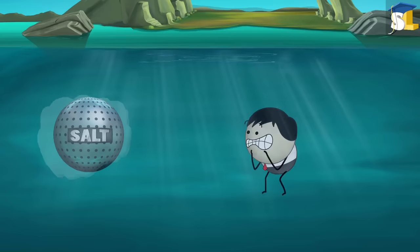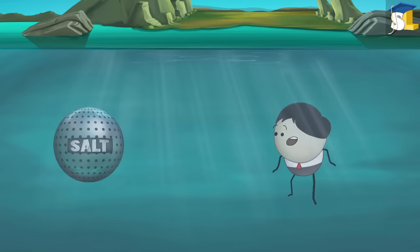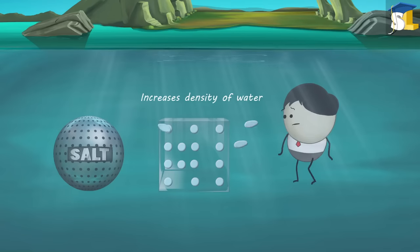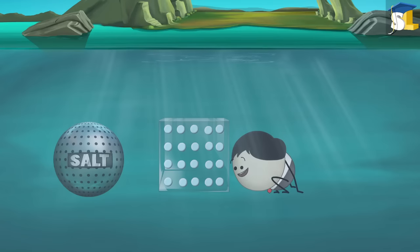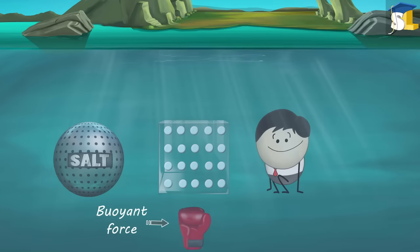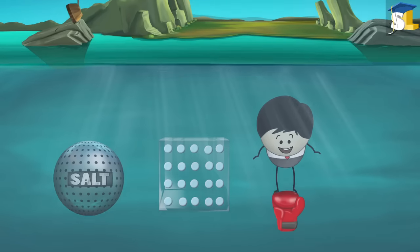Dead Sea has a huge amount of salt dissolved in it as compared to any other sea or ocean. The presence of this salt increases density of water present in the Dead Sea. Higher density leads to greater buoyant force. As the Dead Sea has very high density, it exerts enough amount of buoyant force to make us float on it.